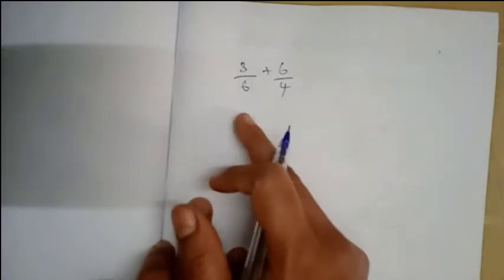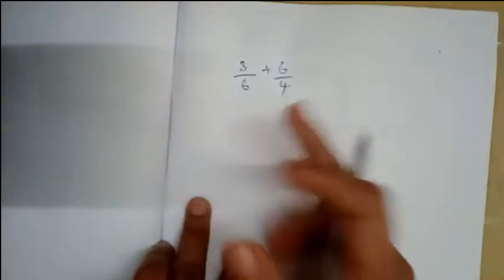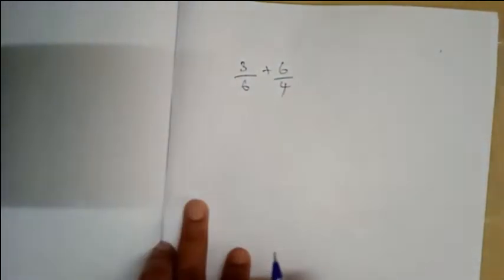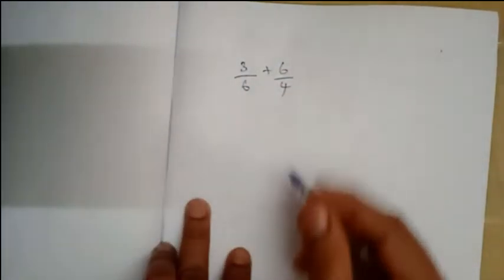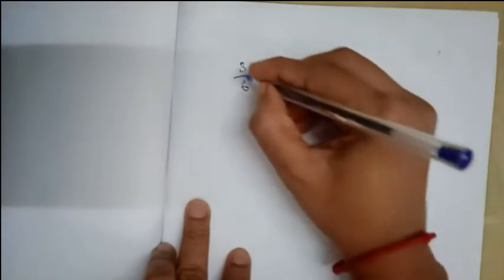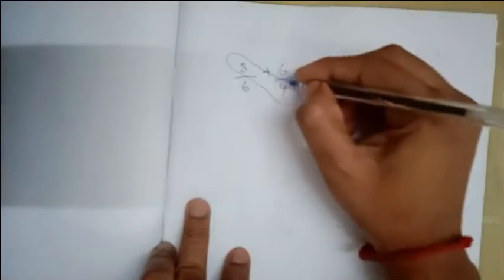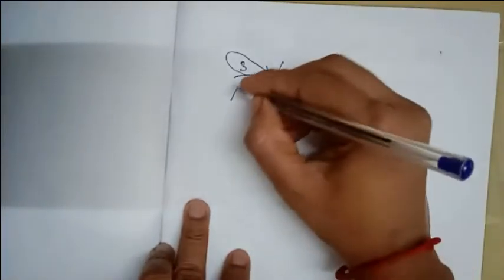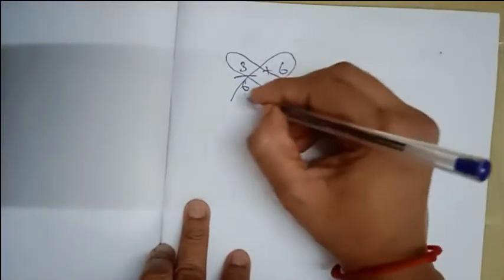The next example is 3 by 6 plus 6 by 4. The butterfly method is used to solve the problem as usual. The butterfly method is to cross multiply.